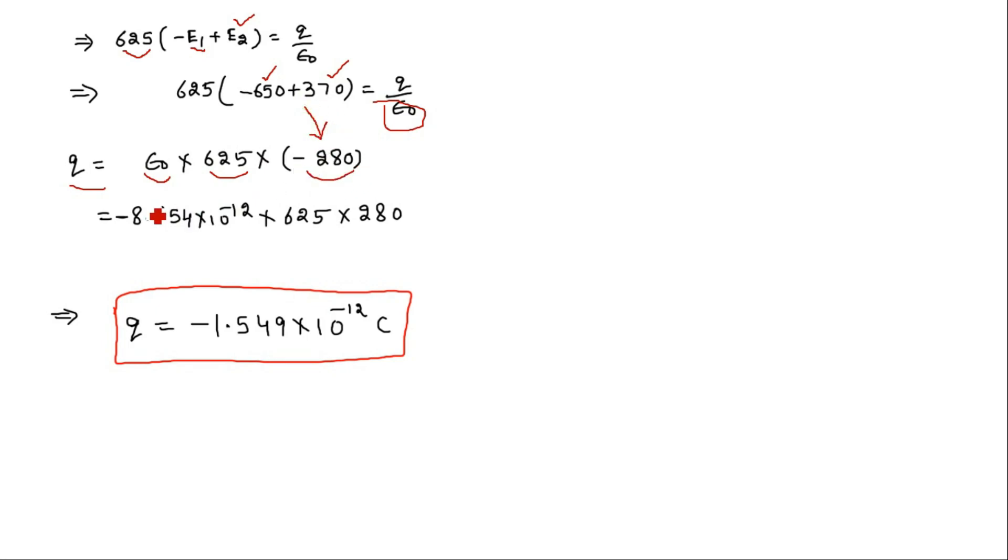If we put the value of epsilon naught, that is 8.854 times 10 to the power minus 12 in appropriate units, and this value is 625, and this value is 280, then we can very easily calculate that the charge enclosed by the cube is actually 1.549 times 10 to the power minus 12 coulombs.